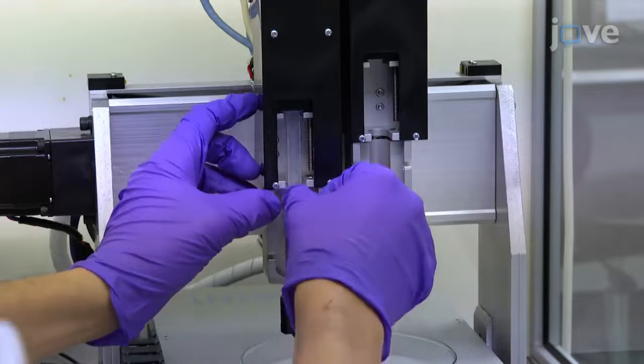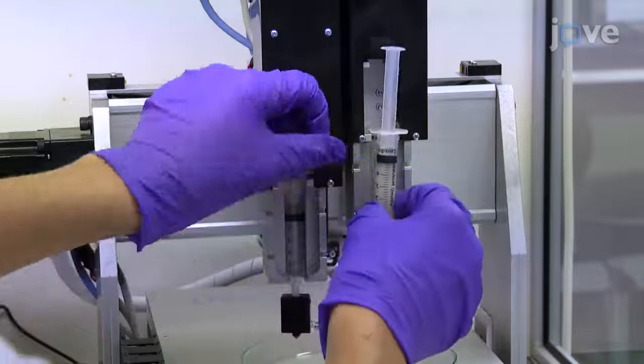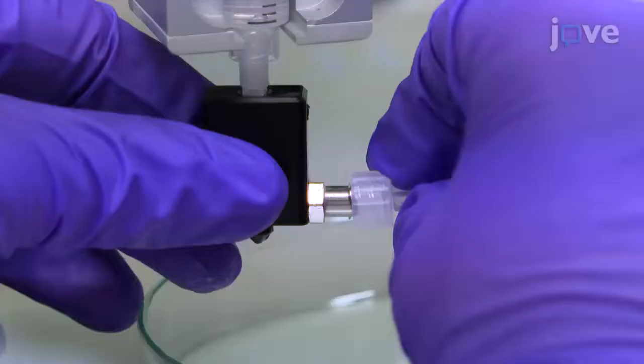Connect the syringe with crosslinking solution to G27 needle in the nozzle and load the syringe into one of the extruder mounts of an ethanol sterilized 3D printer. Mount the syringe with hydrogel into the second extruder and connect it to the nozzle.